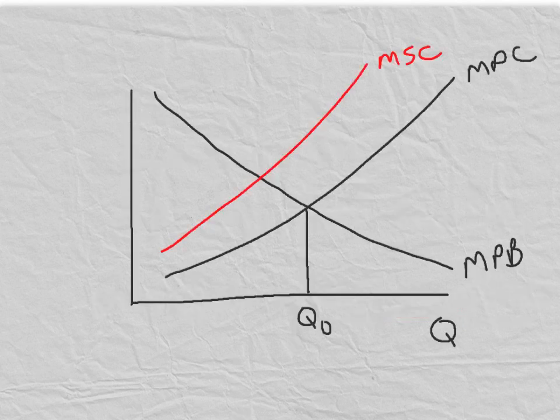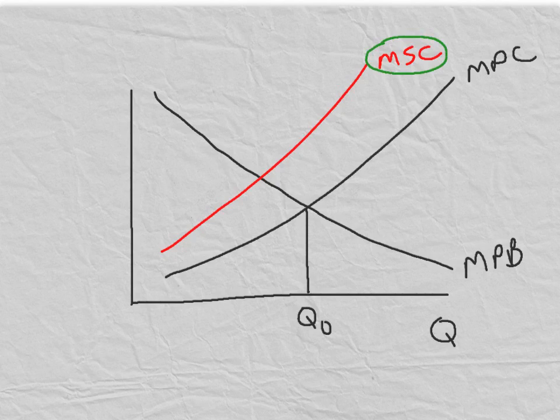Let's start by looking at a negative externality. In this situation, we see clearly that the marginal social cost is always bigger than the marginal private cost. This is an indication of a negative externality.